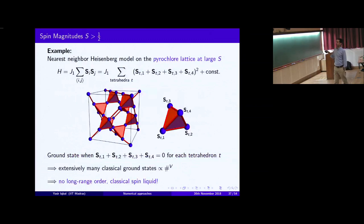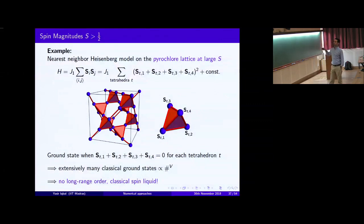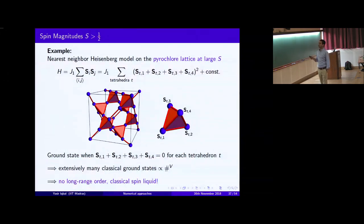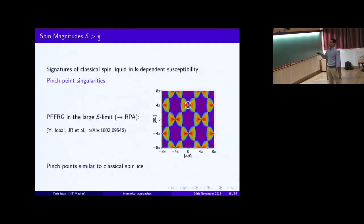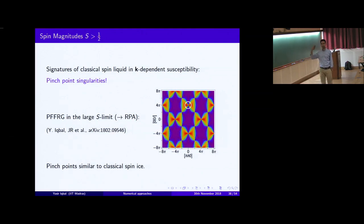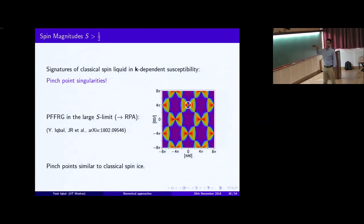For example, the nearest-neighbor Heisenberg model on the Pyrochlore lattice at large s is very special — you can rewrite the Hamiltonian as a squared sum of magnetization on every tetrahedron. The ground state is trivially one in which this vector sum is zero for classical spins. This gives very beautiful features in the structure factor such as pinch points and singularities — the dipolar correlations arising from the solenoidal field. The FRG reproduces the same structure factor as calculated by many other studies in this classical spin ice.